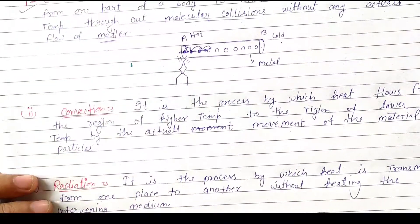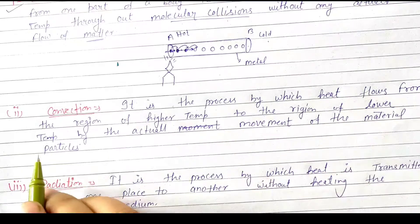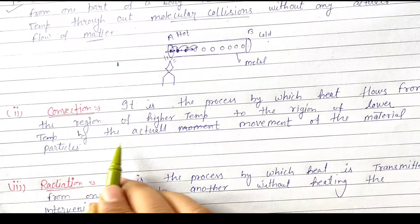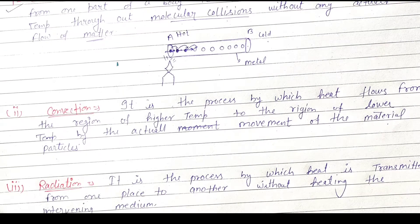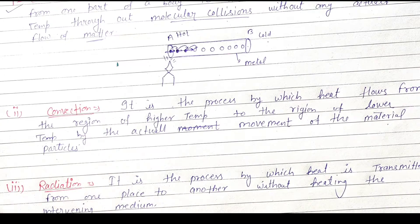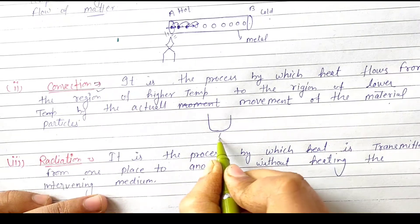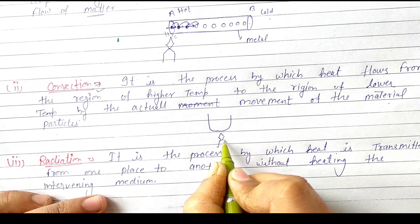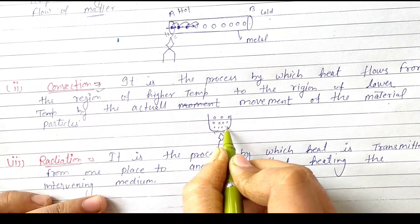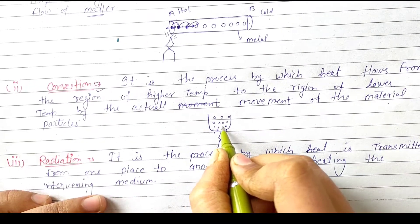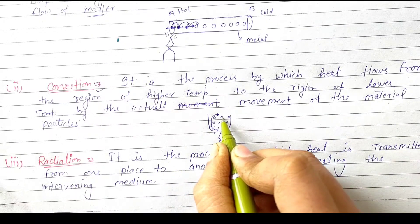Next is convection. Convection is the process by which heat flows from the region of higher temperature to the region of lower temperature by an actual movement of the material particles. Simply, the material particles exchange. For example, let us suppose we have a container. We heat up this container, and the surface molecules move down to the bottom.